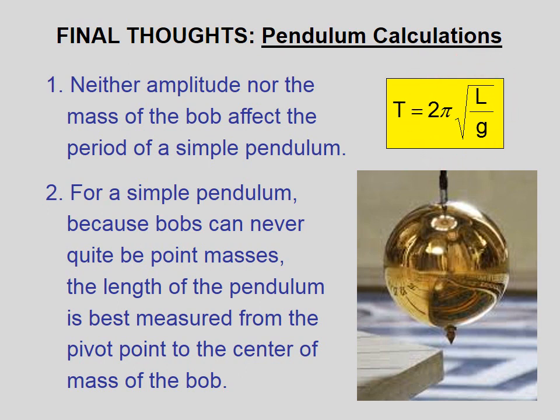Point number two. For a simple pendulum, because bobs can never quite be point masses, the length of the pendulum is best measured from the pivot point to the center of mass of the bob.